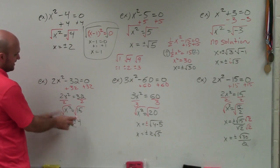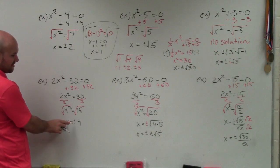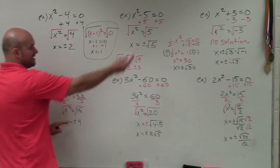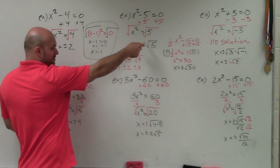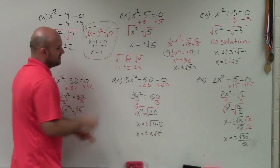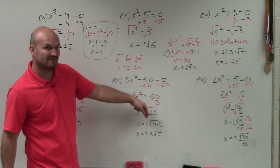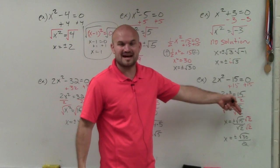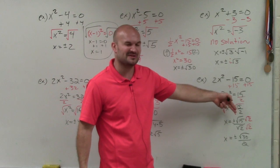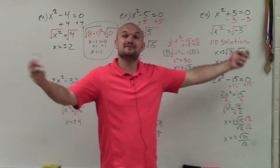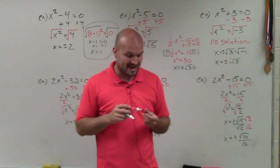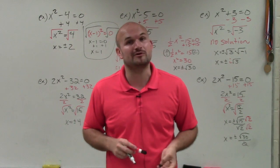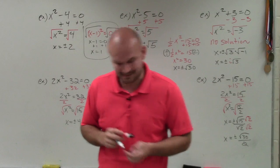Just remember: if you can take the square root of a number, take the square root. If you can't, use plus or minus. If you can simplify it, simplify it. And rationalize the denominator if you can — that's usually preferred. So there you go, ladies and gentlemen. That is how you solve a quadratic using the square root method. Thanks.